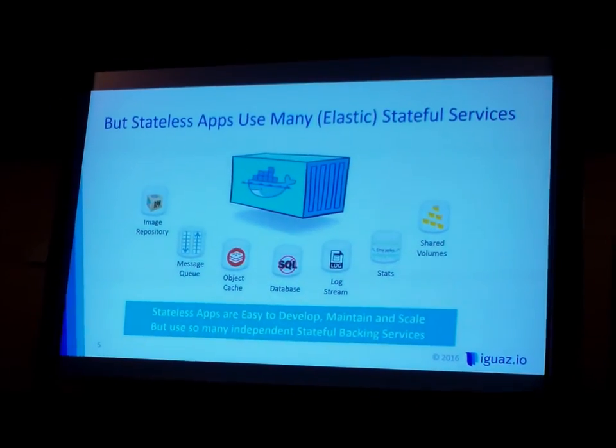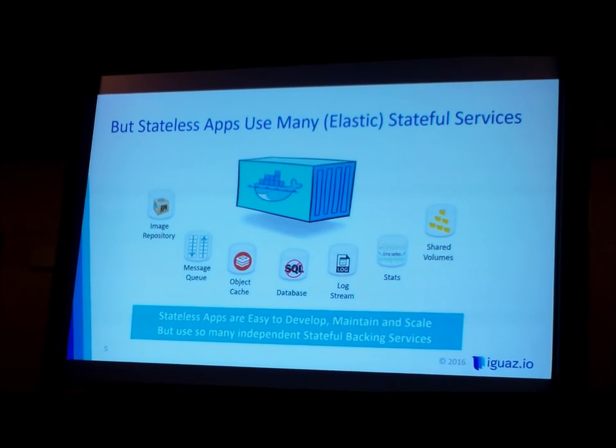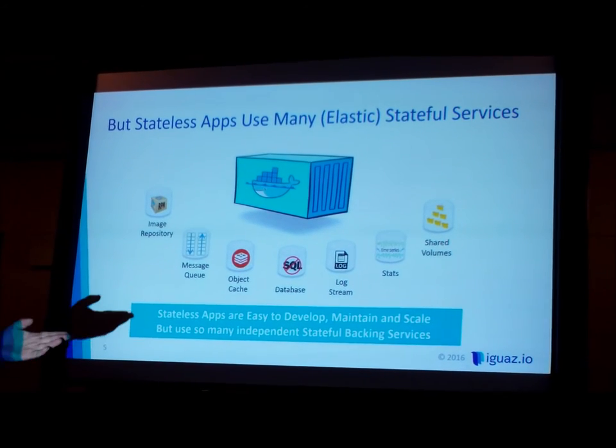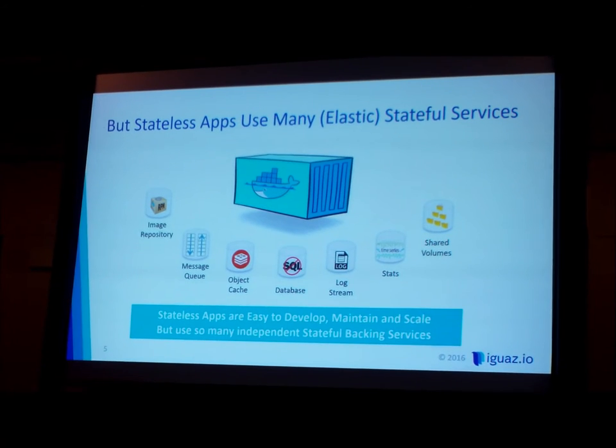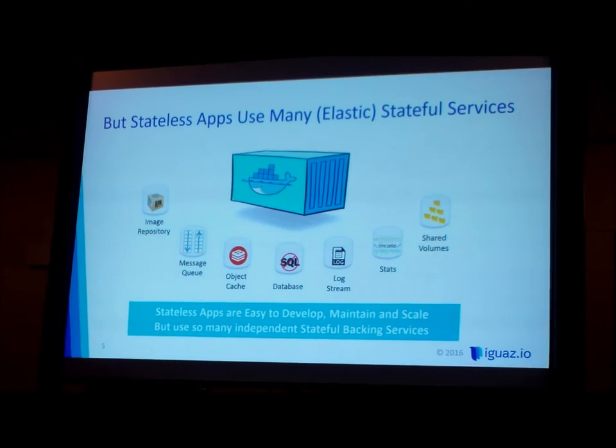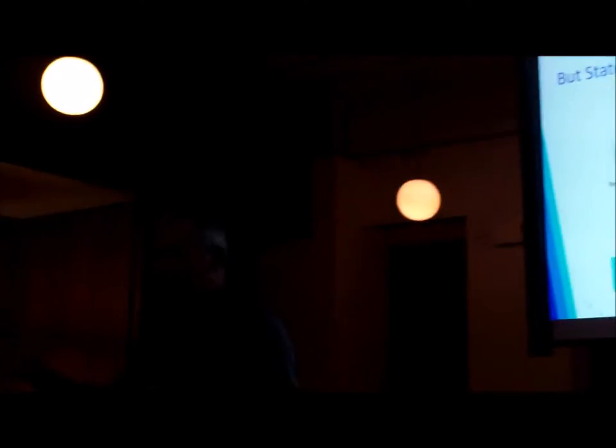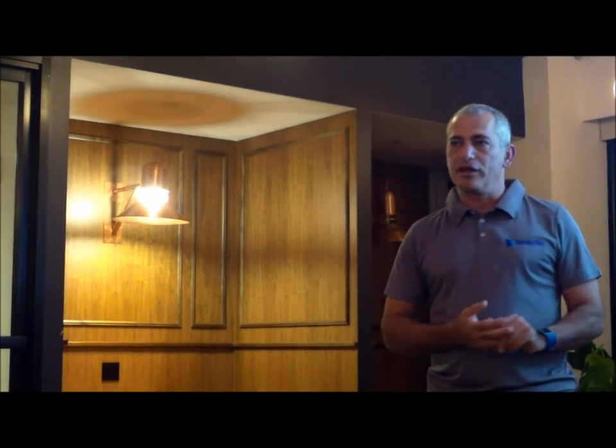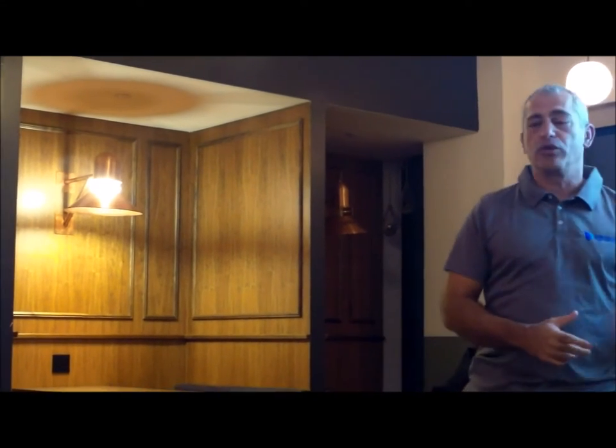Everyone says Docker and microservices are really easy — and it is easy to launch a container, but there's a challenge: we need to build a lot of infrastructure. We need an image repository and message queues, because the right way to communicate between microservices is through a durable message queue, not just an RPC. If my container server crashes, the message will still arrive at an alternate container. So whether it's RabbitMQ or Kafka, that's a form of storage that comes with disks and infrastructure. You also need a cache — like Redis — for things like session cookies to enable elasticity.